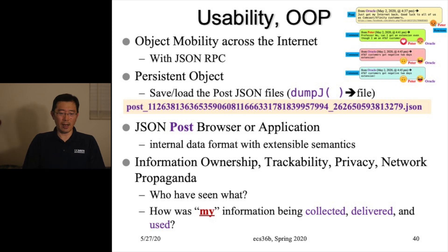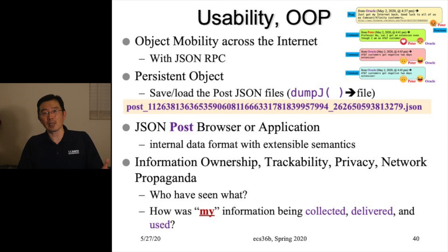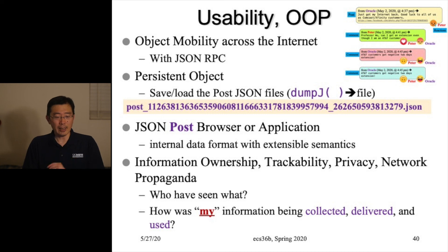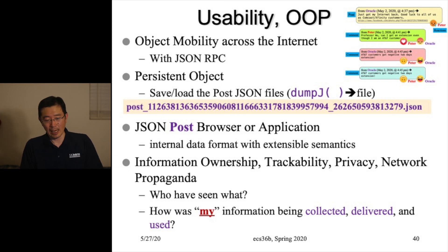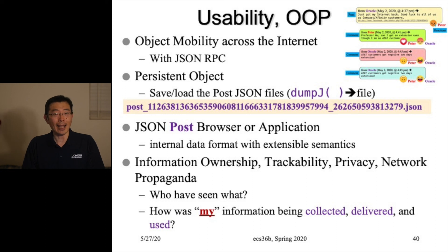So this is what we talked about today — building from the first homework to the last formal homework you need to work on. It really has a lot of usability and touches many concepts, especially information ownership, trackability, privacy, and network propaganda. I hope you understand a little bit about homework assignment number six. Look at the specification, enjoy working on it, and you will learn a lot. See you tomorrow, bye.